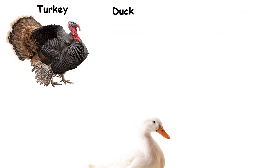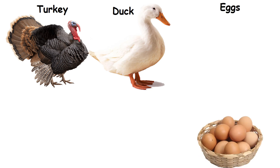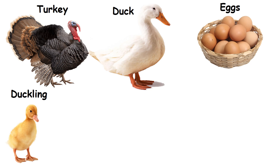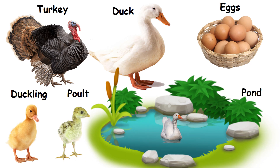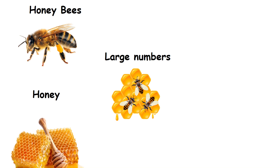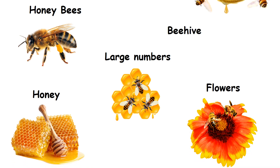Turkey and duck: They are also reared for their eggs and meat. Duck's young one is called a duckling. Turkey's young one is called a poult. Ducks live in a pond. Honeybees: They live together in large numbers. They make honey from flowers. Their home is a beehive.